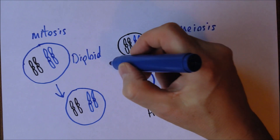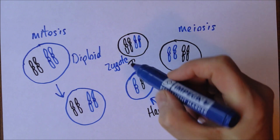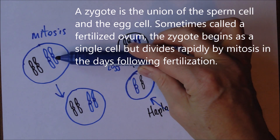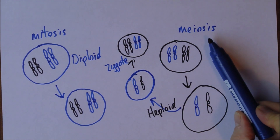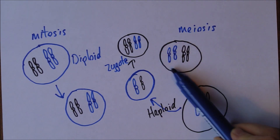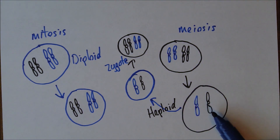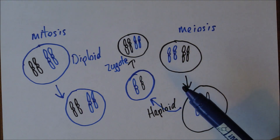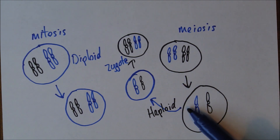This will be a new zygote, which will go on to divide to form the body of the next generation. So to summarize: in mitosis, a diploid cell generates diploid daughter cells. In meiosis, a diploid cell divides to form haploid cells. A male haploid cell combines with a female haploid cell to produce a new diploid zygote. The male haploid cells are the sperm; the female haploid cells are the ovum.